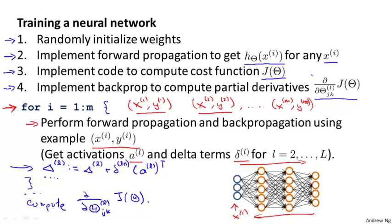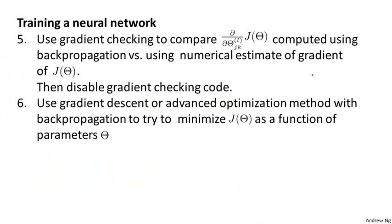Next, in step five, use gradient checking to compare the partial derivative terms computed using backpropagation versus the partial derivatives computed using numerical estimates of the derivatives. Do gradient checking to make sure that both give you very similar values. Having done gradient checking, this reassures us that our implementation of backpropagation is correct. It is then very important that we disable gradient checking, because the gradient checking code is computationally very slow.